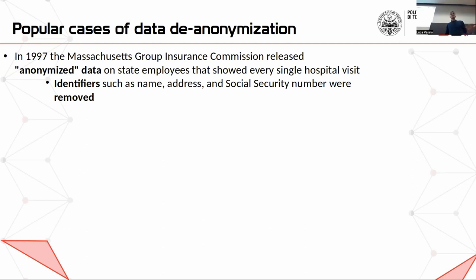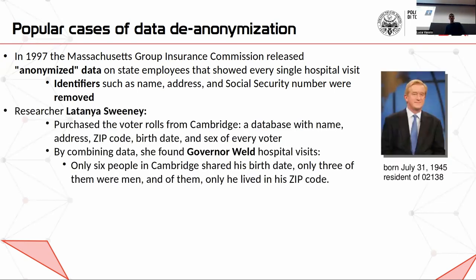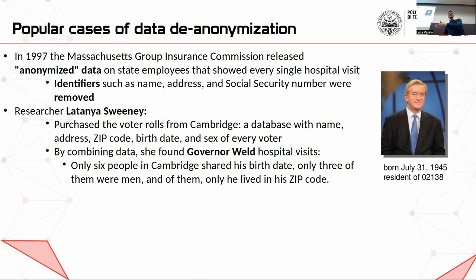However, a researcher purchased the voter roll from Cambridge — a database on all the citizens of Cambridge with name, address, zip code, birth date, and sex. She combined the two datasets and was able to discover all the hospital visits of the governor of Massachusetts. Why? Because only six people in the same city shared his birth date, only three of them were men, and just one of them lived in that zip code. This is a clear case where data was released pseudo-anonymized, but you can still reconstruct who is who.